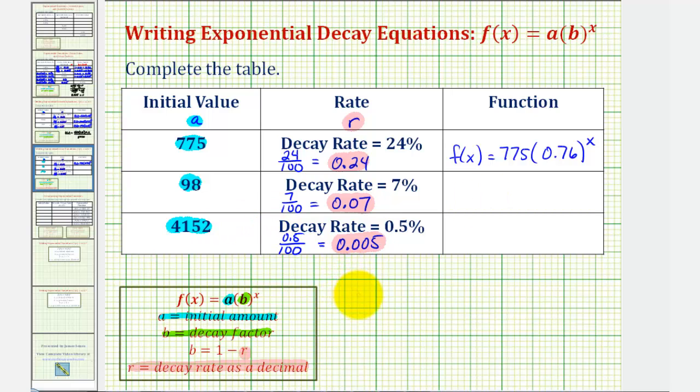Now, for the next decay function, we'd have f(x) equals a, the initial value of 98, times the base b, or the decay factor, which would be one minus r as a decimal, which is 0.07 raised to the power of x. And therefore, the exponential decay function would be f(x) equals 98 times the base of 0.93 raised to the power of x.